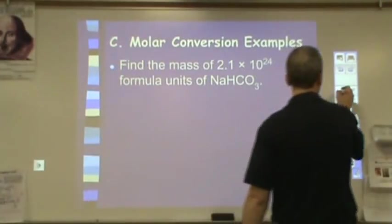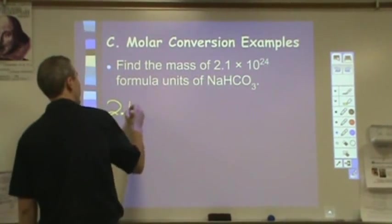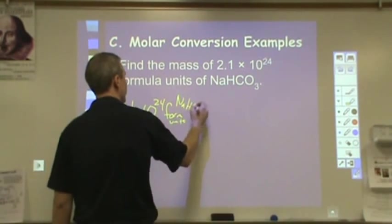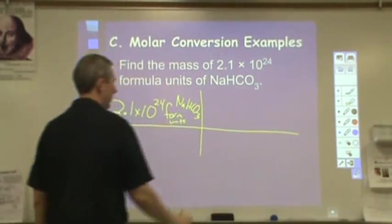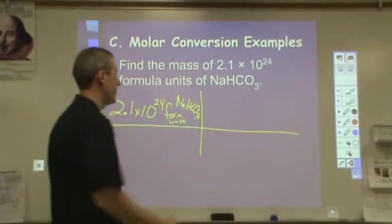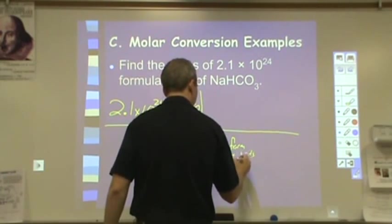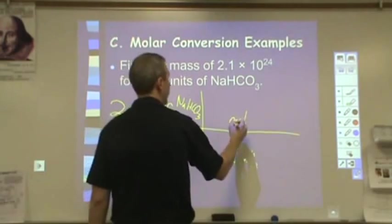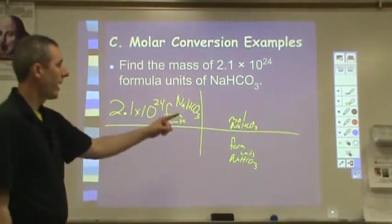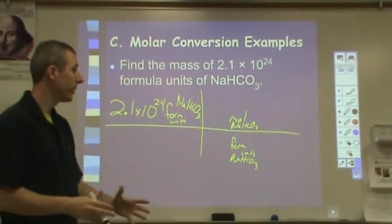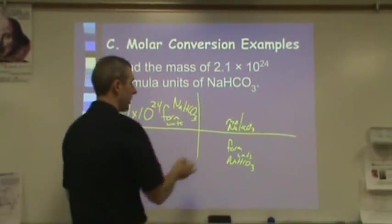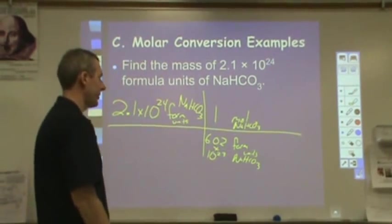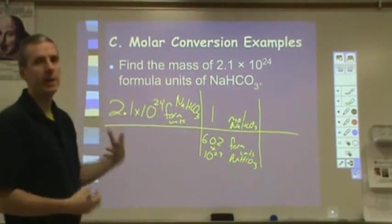Here I have 2.1 times 10 to the 24th formula units of sodium bicarbonate. You're going to draw your conversion train. The units and chemical both get copied down here. Formula units of NaHCO3. Not in moles. So the first thing I do is I change it to moles. I have to put in two numbers that make these two things equal. Moles and formula units, that's numbers of things. Now I'm going to use that 6.02 times 10 to the 23rd. One mole is 6.02 times 10 to the 23rd things, formula units in this particular case. Then I'm not done because it doesn't ask me for moles. It asks me for grams. It asks me for mass.